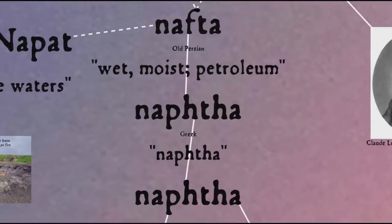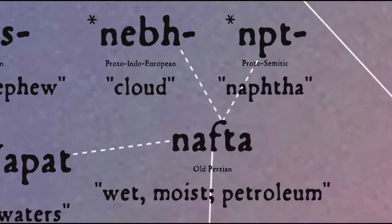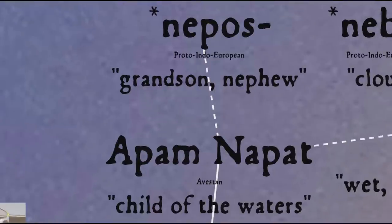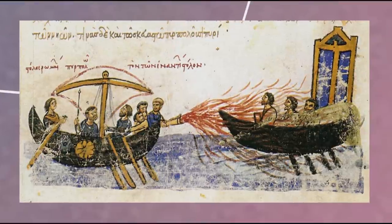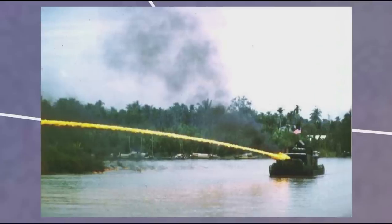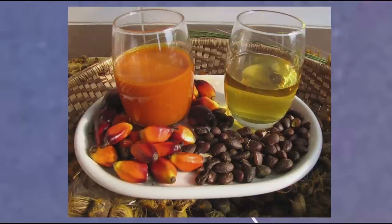The word 'naphtha' is surprisingly old. It comes into English via Latin and Greek from Old Persian 'naphtha', which could mean wet, moist, or petroleum, in turn coming either from Proto-Indo-European 'nebh' (cloud) or Proto-Semitic 'NPT', referring to the petroleum substance. There might be a connection to the Proto-Indo-Iranian water god Apam Napat, whose name might mean 'child of the waters', with 'napat' perhaps being related to the English word 'nephew'. In the Byzantine Empire, naphtha was used as a component of Greek fire — basically a 7th century flamethrower — and in the 20th century the Americans perfected this horrific weapon in the form of napalm, a portmanteau of 'naphthenic' and 'palmitic', since it was made from naphtha and palmitic acid found in palm oil.